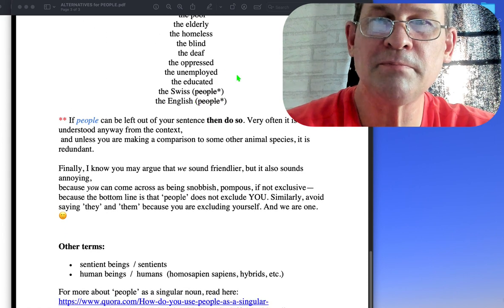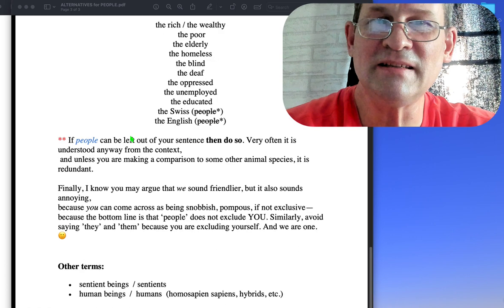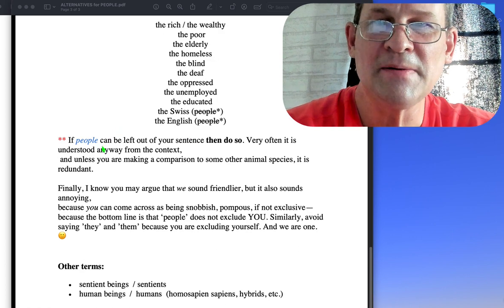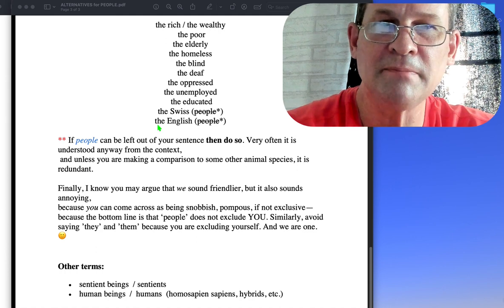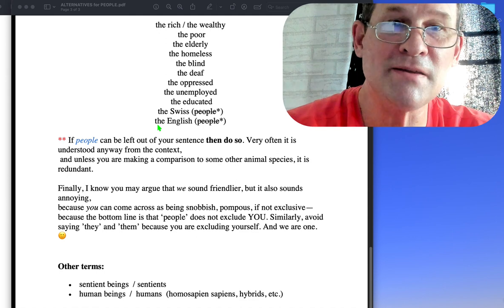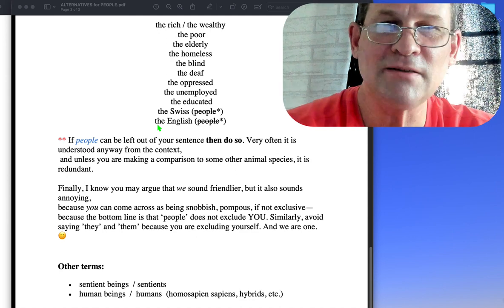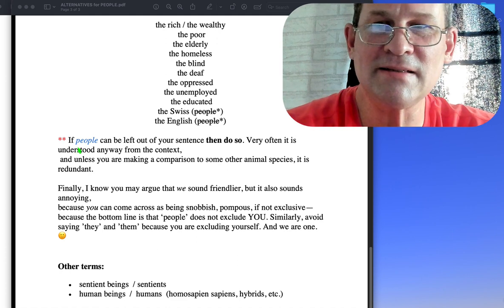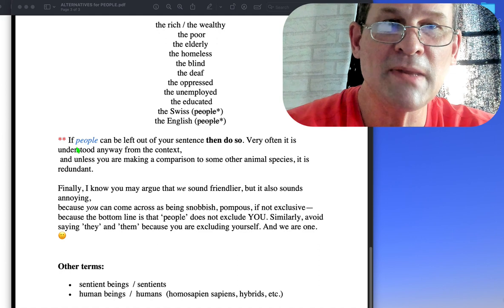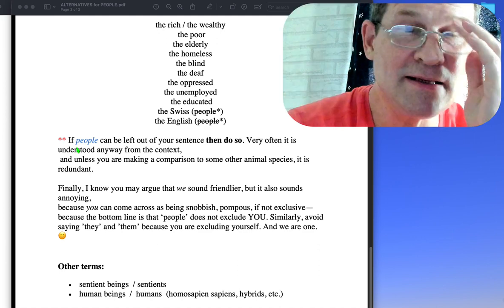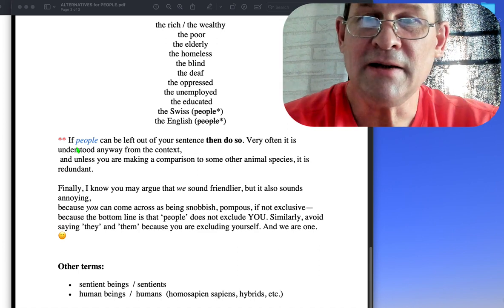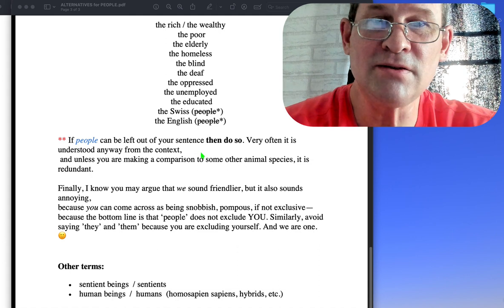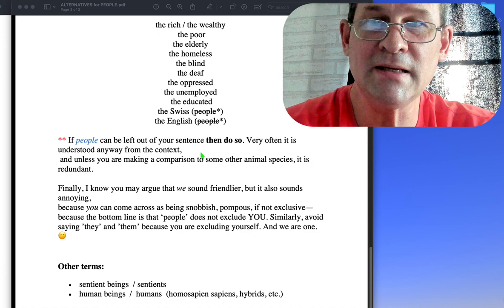Avoid people here if necessary. With English people, the English - if you're saying people, then you're going to want to use the probably. Others will disagree. Don't say the Germans, you know, don't mention the Germans, but I think that's okay. If people can be left out of your sentence, then do so. Very often it's understood anyway from the context, and unless you're making a comparison to some animal species, it's redundant.